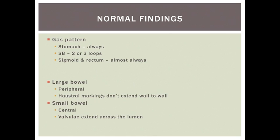The next important step is to know the difference between the appearance of large and small bowel. The large bowel tends to sit around the edge of the abdomen and the haustral markings do not extend the whole way across the lumen. Small bowel tends to sit more centrally and the valvulae extend across the whole lumen, giving the appearance of a line going across the lumen.